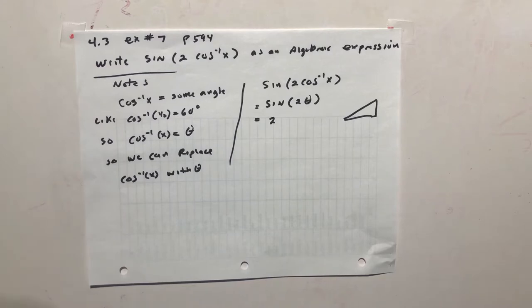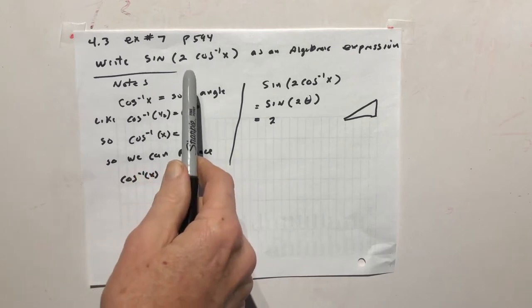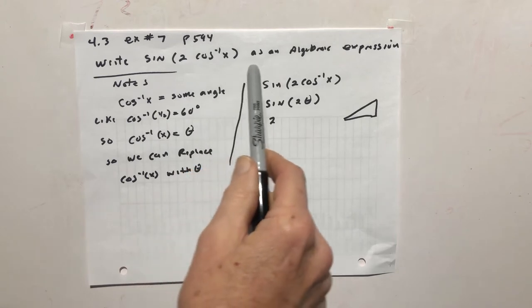Section 4.3, example number 7, page 594. The directions say, write sine of 2 cosine inverse x as an algebraic expression.